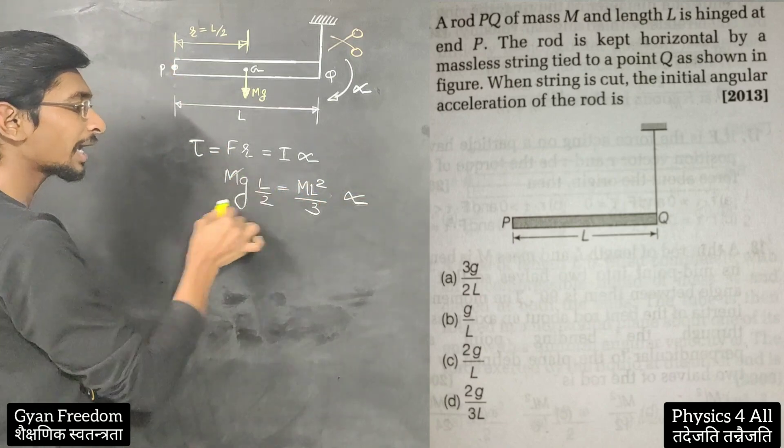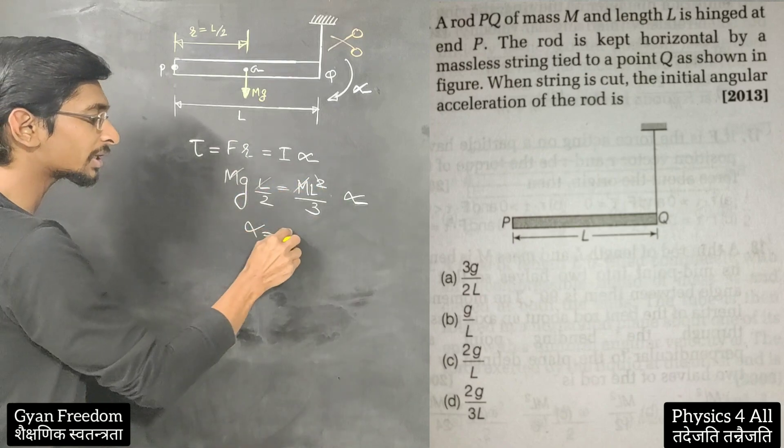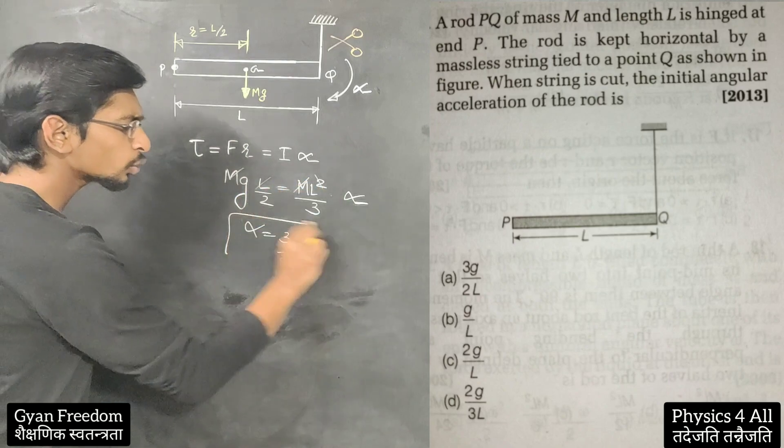And alpha, we have to look at M. M cancels out. L cancels out. So alpha we got as 3G by 2L. Option A.